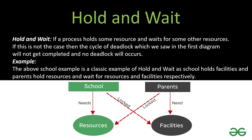Let's understand hold and wait. If a process holds some resource and waits for another resource, hold and wait has occurred. If this were not the case, the cycle of deadlock would not complete. The school example is a classic case: the school holds facilities and parents hold resources; the school needs the resources and parents need the facilities, hence creating a hold and wait situation.